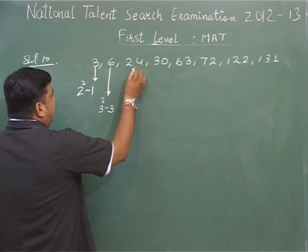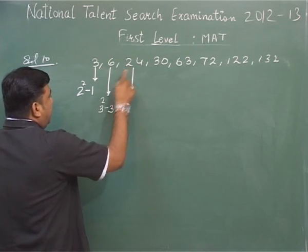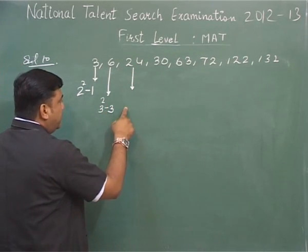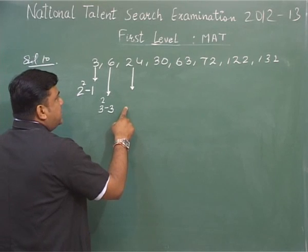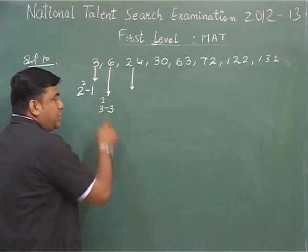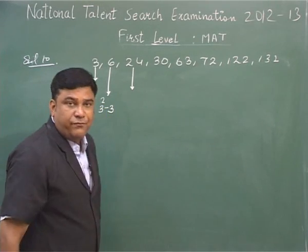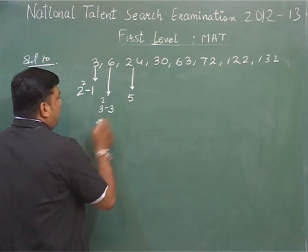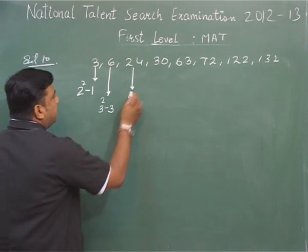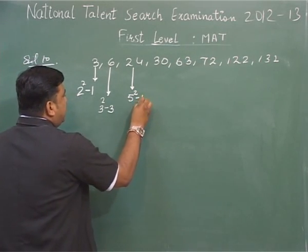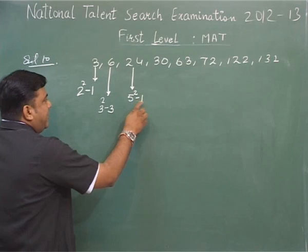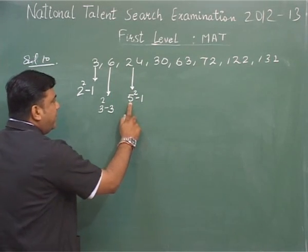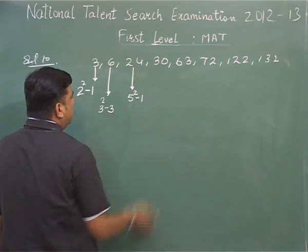By this we can say the numbers are 2, 3, 4. If we use 4, then 4 squared is 16 and the relation is not perfect. So we are taking 5. By this, 5 squared minus 1 becomes 24 — since it is 25, 25 minus 1 equals 24.